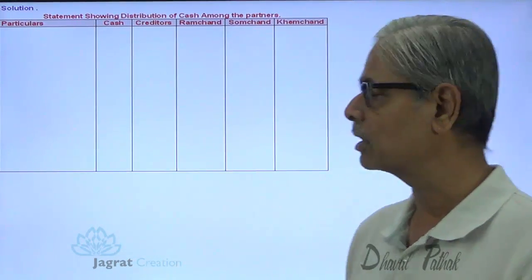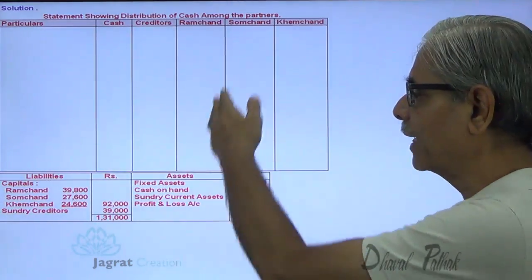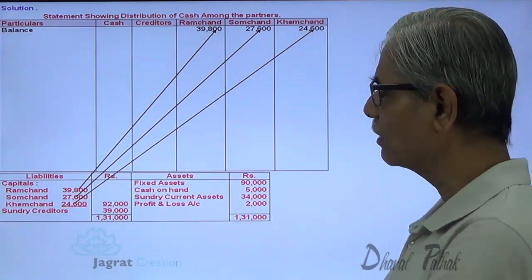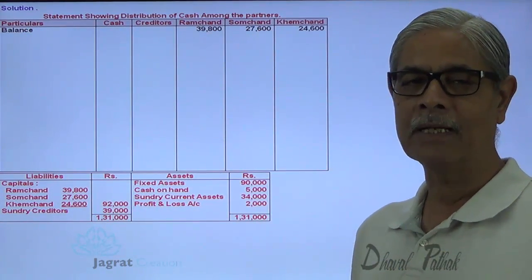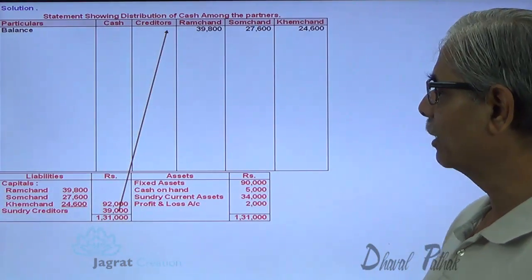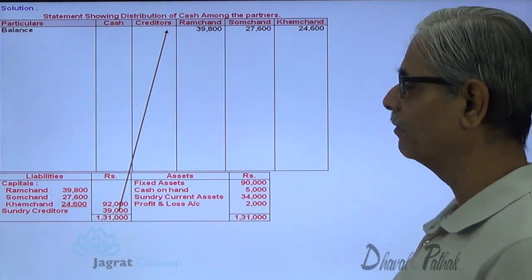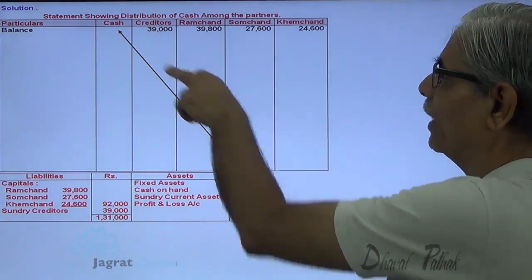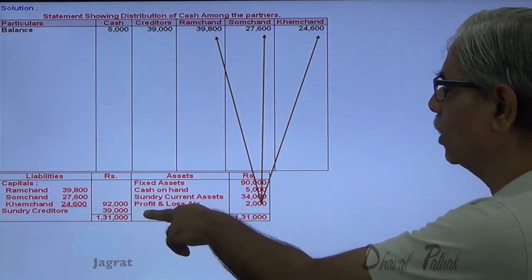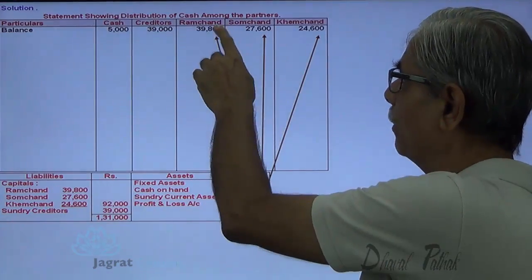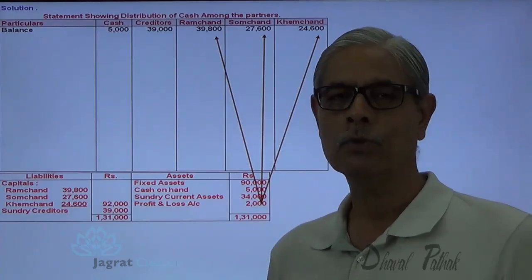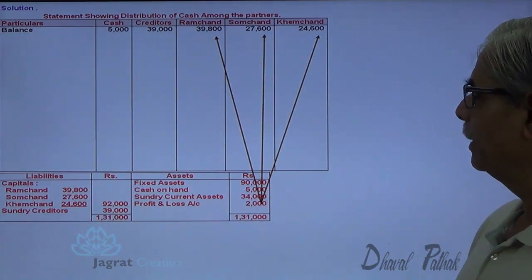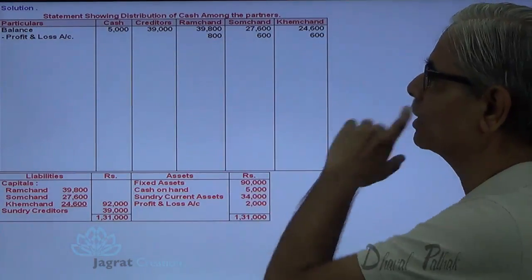Statement showing the piecemeal distribution of cash among the partners. First I will write down the opening balances: Ramchand capital account, Somchand capital account and Khemchand capital account — 24,600. This profit and loss account has a debit balance; it is an accumulated loss that will be distributed amongst partners in the profit sharing ratio. The cash on hand is 5,000. The profit and loss account balance of 2,000 will be distributed amongst Ramchand, Somchand and Khemchand in the ratio 4:3:3, totalling 10. So the distribution will be 800, 600 and 600 — profit and loss distributed, which is to be deducted.